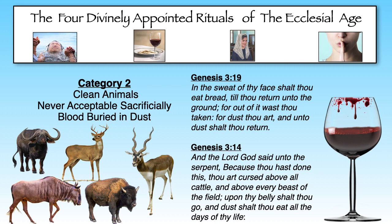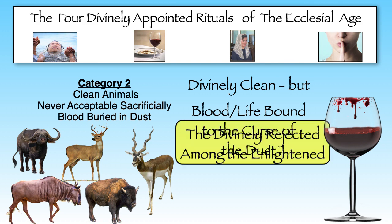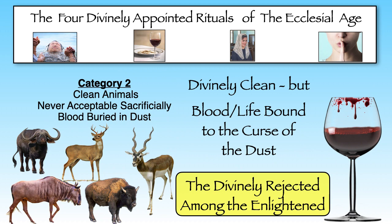This is why we see the use of dust and ashes in the context of divine judgments throughout Scripture, such as how the aromatic dust of the four incense ingredients are transfigured into that single cloud that embraces the glory of God above the mercy seat on every Day of Atonement in the most holy chamber, saving the life of the high priest. The blood of these wild but divinely clean animals was bound to the curse of the dust. This category of clean animals is a shadow projection of all those within the enlightened community who will be required to attend the judgment seat of the Son of God, but will be rejected.